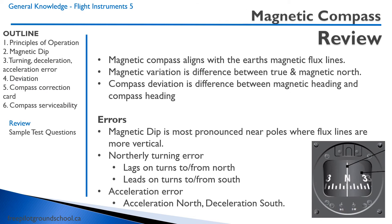The magnetic compass aligns with the Earth's magnetic flux lines. Magnetic variation is the difference between true and magnetic north. Compass deviation is the difference between magnetic heading and compass reading. There are a number of errors in the compass. Magnetic dip is most pronounced near the poles, where the flux lines are more vertical.